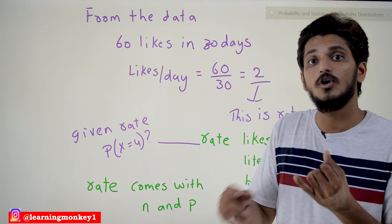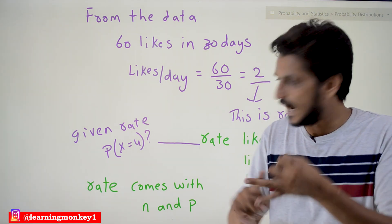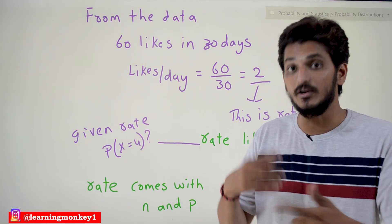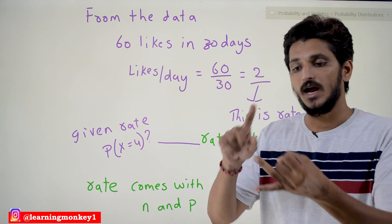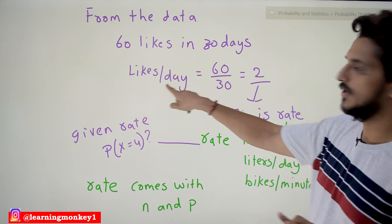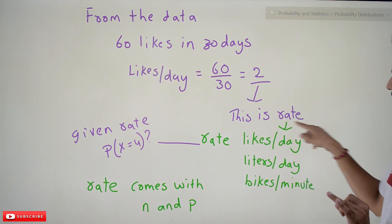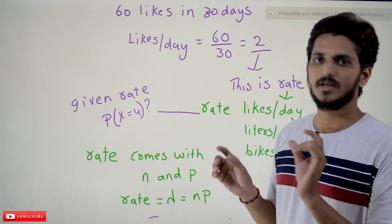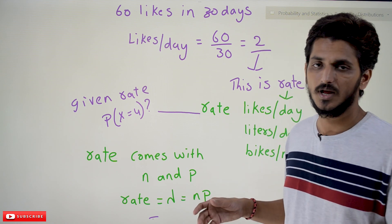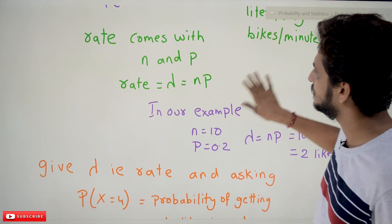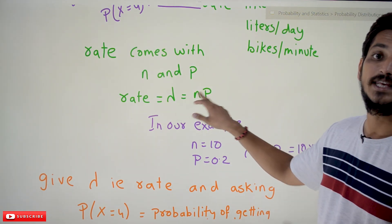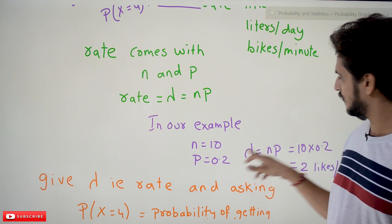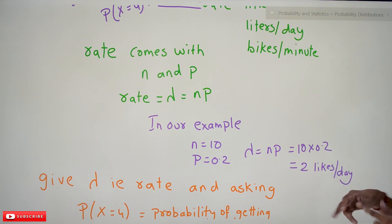Without n and p values, you can identify the probability using Poisson distribution. We apply Poisson distribution when n and p are not available but the rate value is given — likes per day, liters per day, bikes per minute. This rate value is called lambda. When lambda is given, we apply Poisson distribution.